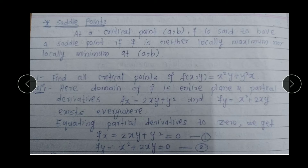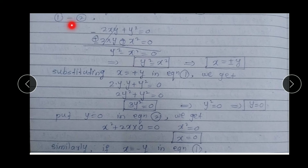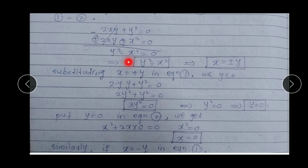Just as we solve simultaneous equations, we apply the same method here. Subtracting the second equation from the first: (2xy + y²) − (x² + 2xy) = 0. The 2xy terms cancel, giving y² − x² = 0. Shifting −x² to the right: y² = x², which implies x = ±y.